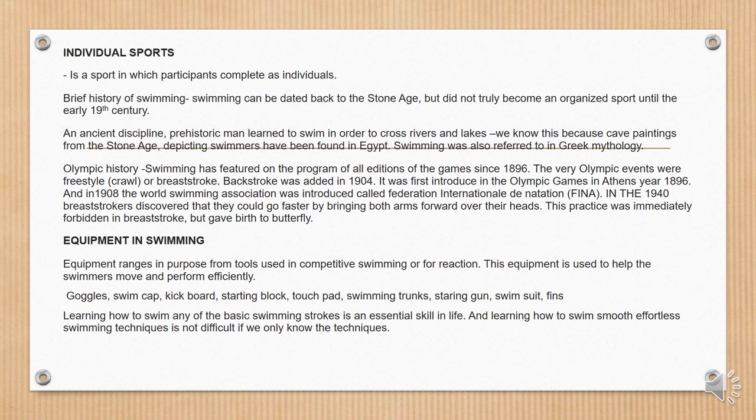Breaststroke swimmers discovered that they could go faster by bringing both arms forward over their heads. This practice was immediately forbidden in breaststroke but gave birth to butterfly. Equipment in swimming ranges in purpose from tools used in competitive swimming to recreation, used to help swimmers move and perform efficiently. Equipment includes: goggles, swim cap, kickboard, starting block, touchpad, swimming trunks, starting gun, swimming suit, and fins. Learning any of the basic swimming strokes is an essential skill in life. Smooth, effortless swimming technique is not difficult if we only know the techniques.